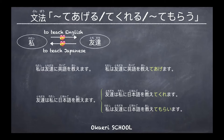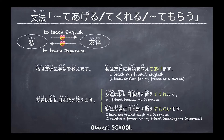Watashi wa tomodachi ni nihongo wo oshiete moraimasu. So: watashi wa tomodachi ni eigo wo oshiete agemasu — the favor goes from me to the friend, I teach my friend English as a favor. The second: tomodachi wa watashi ni nihongo wo oshiete kuremasu — my friend teaches me Japanese as a favor to me.